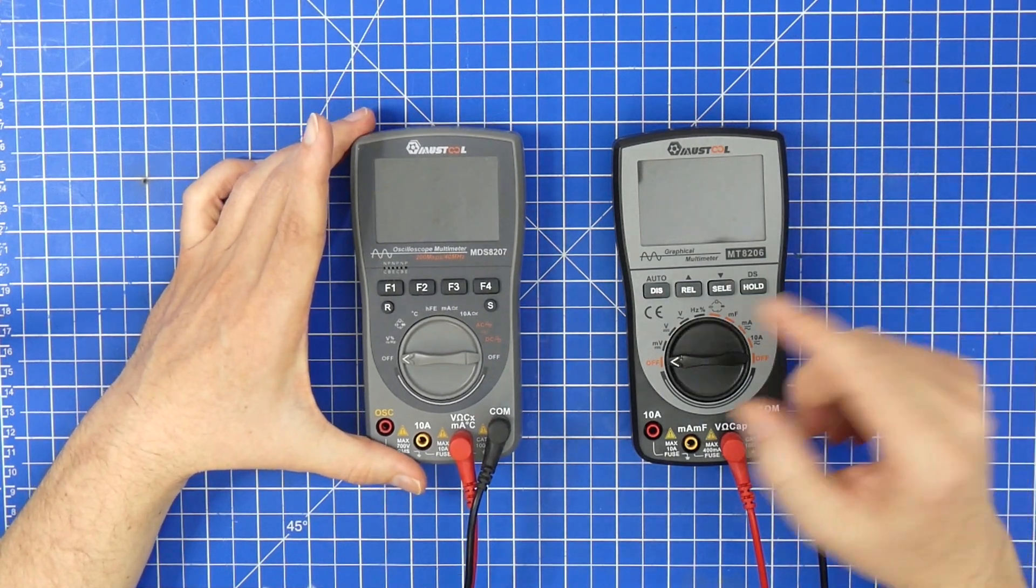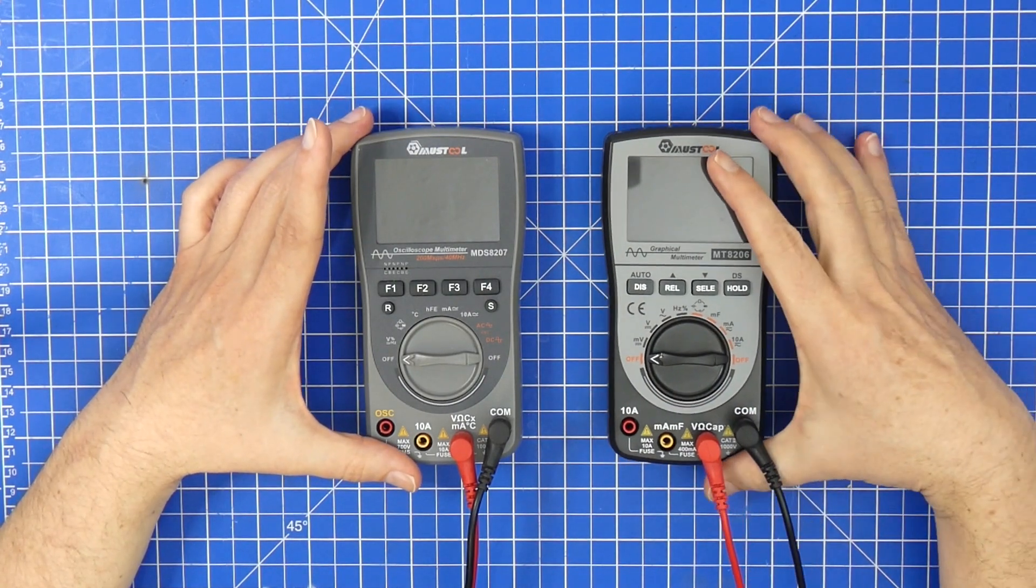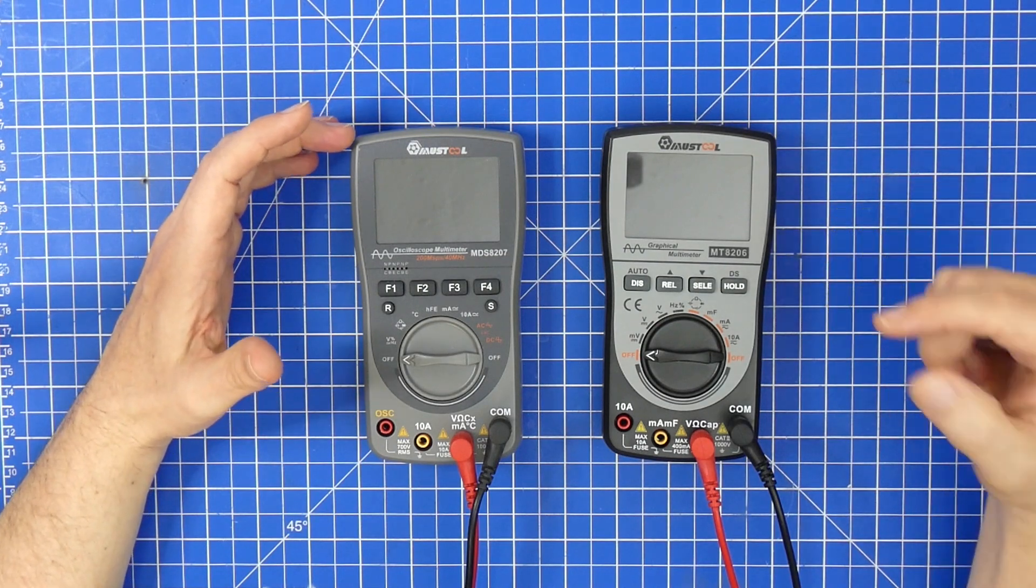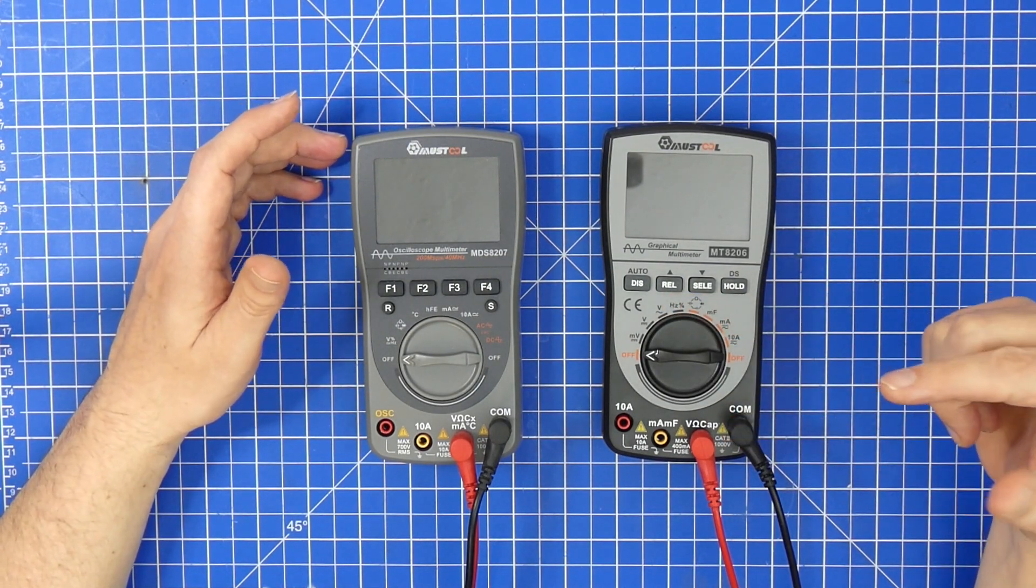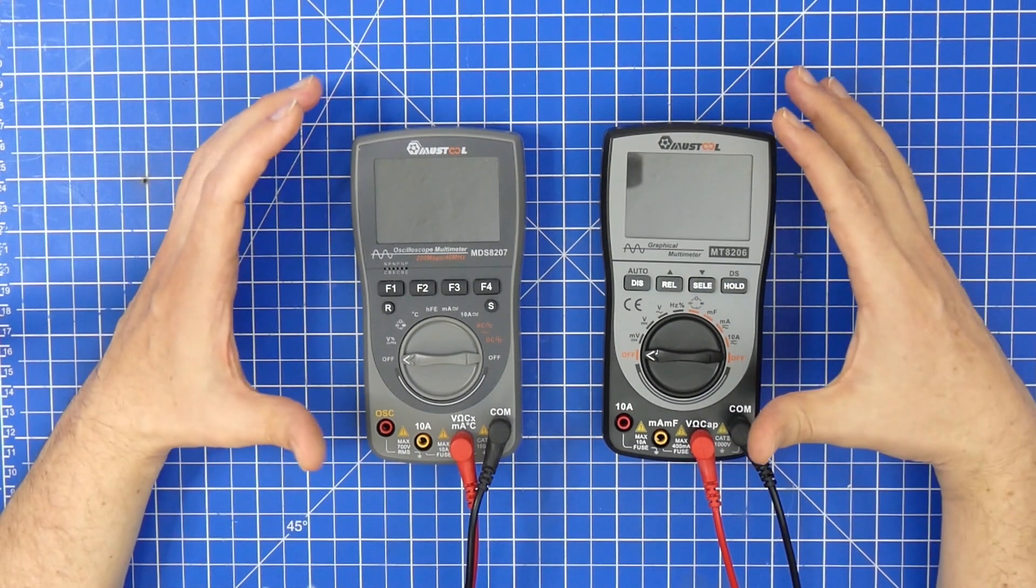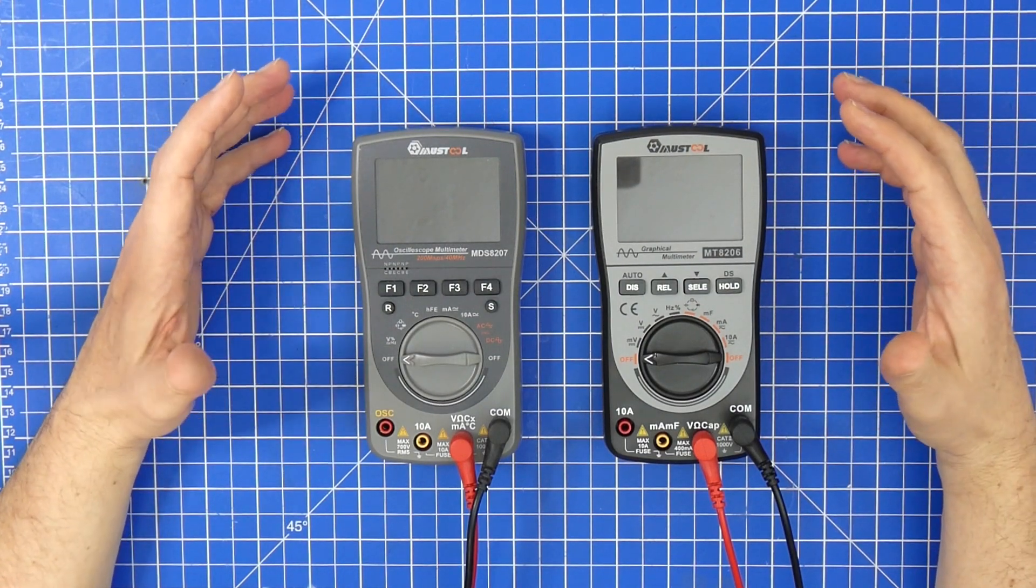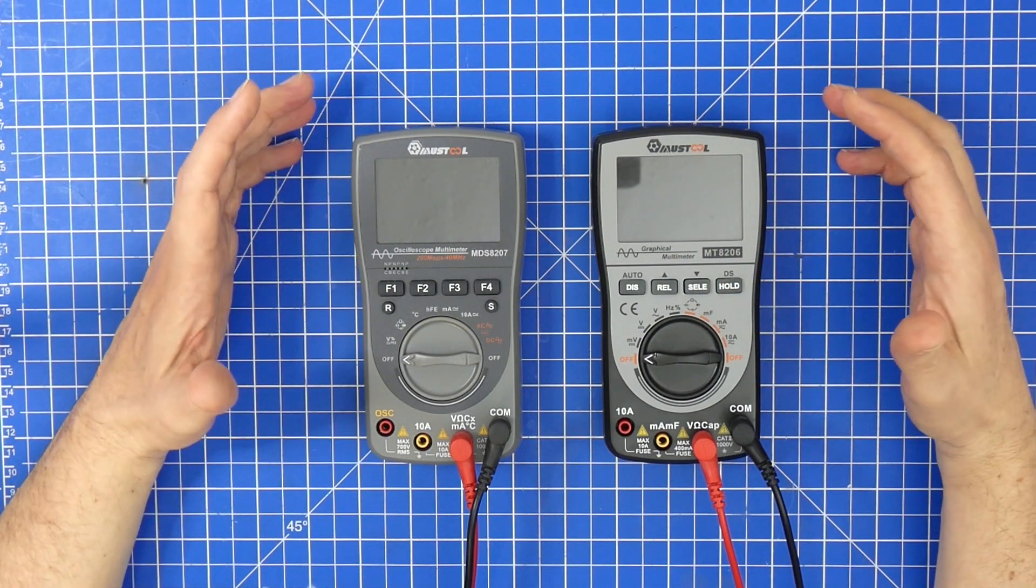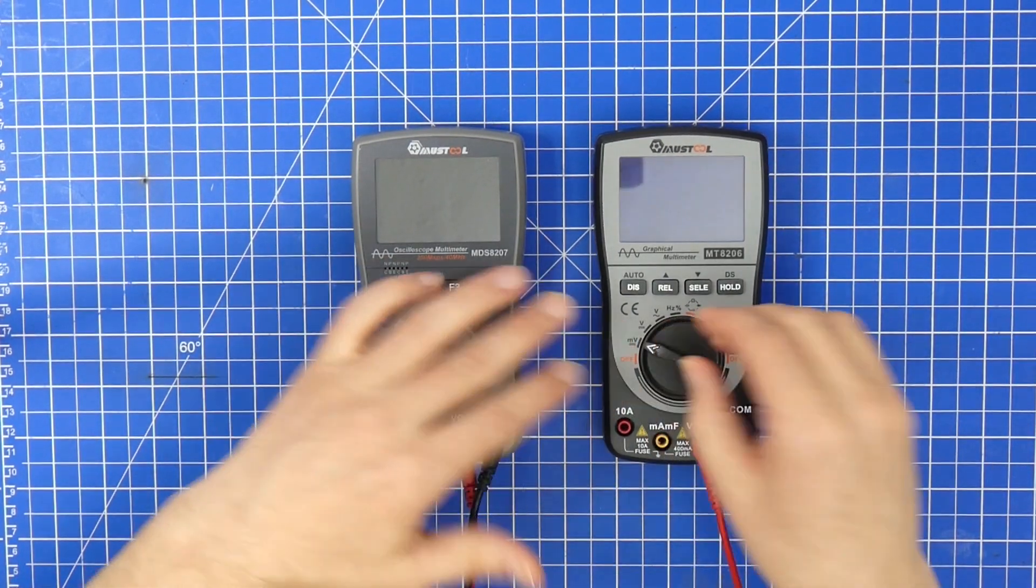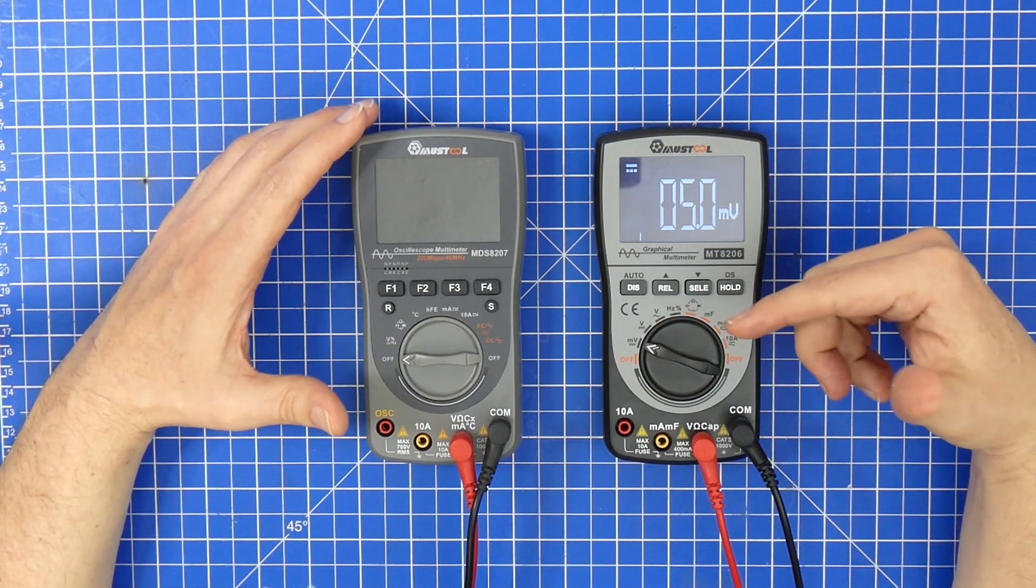Basically what they did is they took every aspect of what they had with this device and they rethought it, they made it better, they improved on the usability. But still both devices kind of have their niche where they're perfect. Where the 8206 is a multimeter that you can put into a graphical mode.